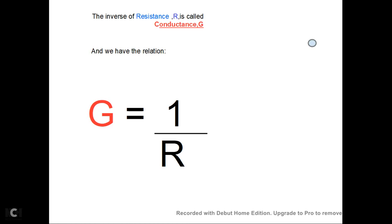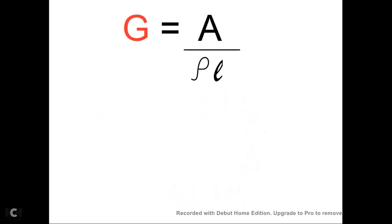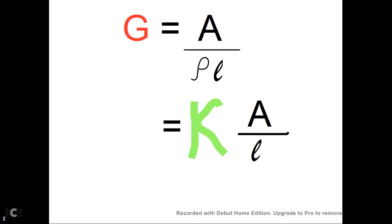From the resistivity equation, R is equal to rho L by A — that is resistivity into length of the conductor divided by area of the conductor. Inverting, conductance G is equal to A by rho L. We define kappa as 1 by rho, where kappa is called conductivity. So G equals kappa times A by L.